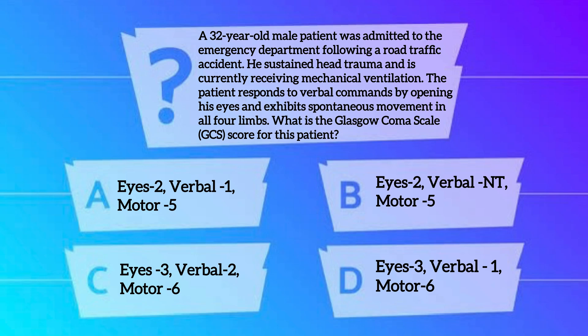Let's practice calculating GCS with previous year questions. A 32-year-old male patient was admitted to the emergency department following a road traffic accident. He sustained head trauma and is currently receiving mechanical ventilation. The patient responds to verbal commands by opening his eyes and exhibits spontaneous movements in all 4 limbs. What is the GCS score? Option A: Eyes 2, Verbal 1, Motor 5. Option B: Eyes 2, Verbal 1, Motor 5. Option C: Eyes 3, Verbal 2, Motor 6. Option D: Eyes 3, Verbal 1, Motor 6.